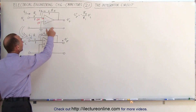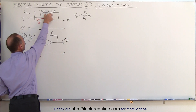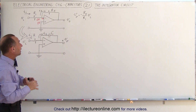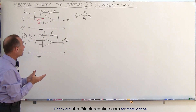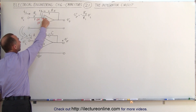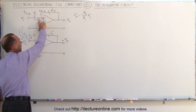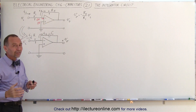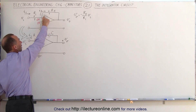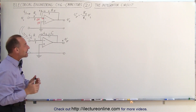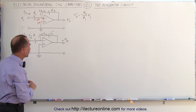But what happens when we replace the feedback resistor with a capacitor? Remember that in an ideal operational amplifier the current going into the amplifier on the input signal can be considered zero, and the voltage across the input can be considered zero as well because there's no voltage drop — at least not in an ideal operational amplifier.